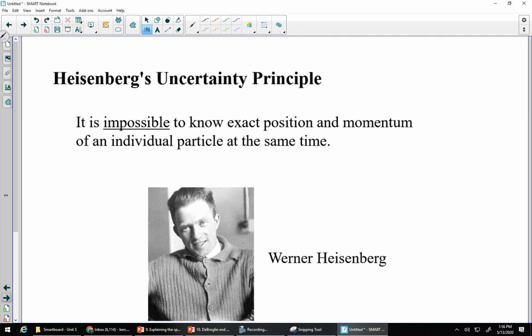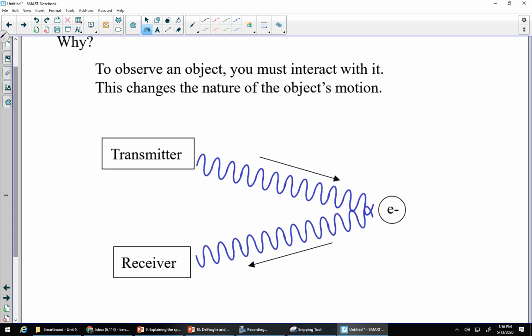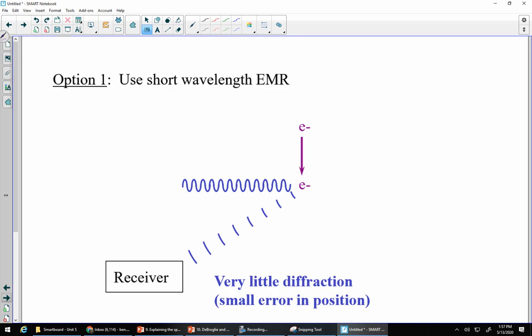Next pieces that get us in this quantum model is Heisenberg's uncertainty principle. Heisenberg said it's impossible to know the exact position and momentum of an individual particle at the same time. In other words, it's impossible to know where it is and where it's going at the exact same time, which is kind of weird to think about. This gets us into the end of that Dr. Quantum video where it showed a little bit about as soon as you observe something you change it. The reason for this is, well, how do we observe things? We typically use EMR. So we send EMR out, it interacts with something, we send it back, and we look at whatever is sent back. There's two options for this.